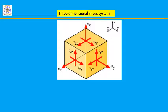The stress components of a three-dimensional coordinate system can be represented in the form of the stress tensor. The stress tensor can be written in matrix form as T3 = [ σx, τxy, τxz; τxy, σy, τyz; τxz, τyz, σz ]. This matrix is called the stress tensor.